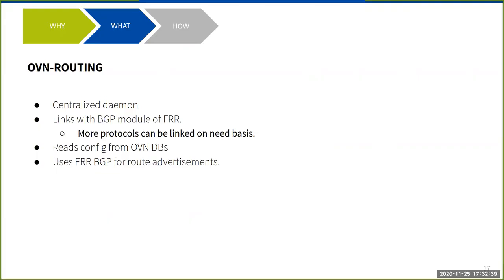What we are looking to add is a new daemon called OVN routing. It's going to be a centralized daemon, just like OVN-NorthD — one instance running for each OVN deployment. This daemon links with the BGP module of FRR, and since FRR is modular it could link with multiple FRR modules going forward based on requirements. This daemon is capable of reading configurations from OVN databases — it understands logical routers, logical switches, data path bindings, and port bindings. And because it links with FRR BGP, it uses FRR BGP functions to actually perform route advertisements.